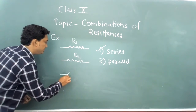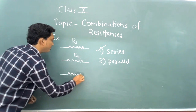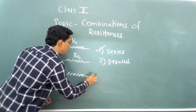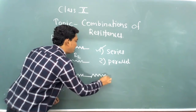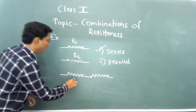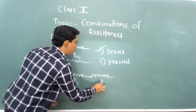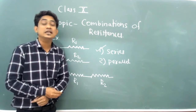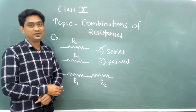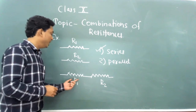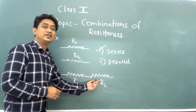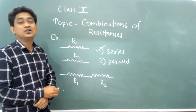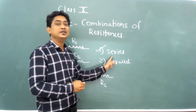So here is the first resistance, and immediately connected to it is the second resistance. When two or more resistances are connected in an end-to-end manner, such a combination is called a series combination.